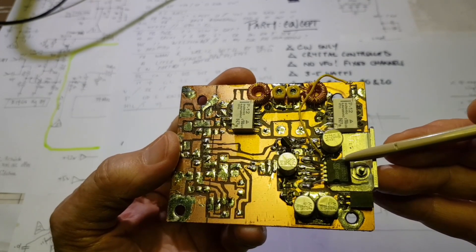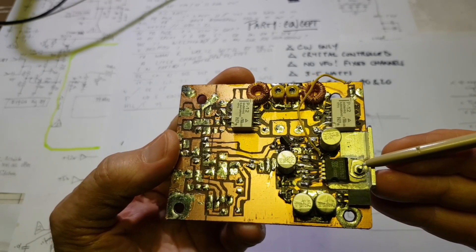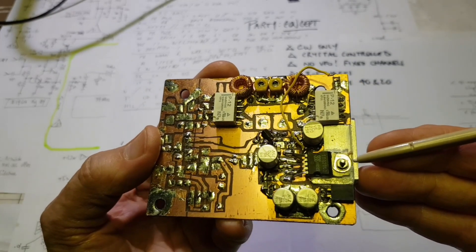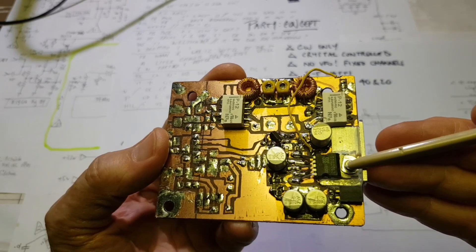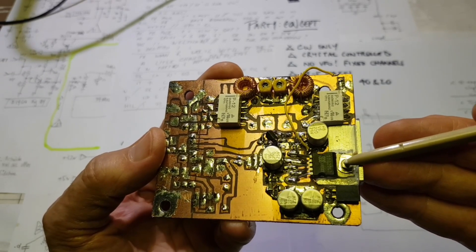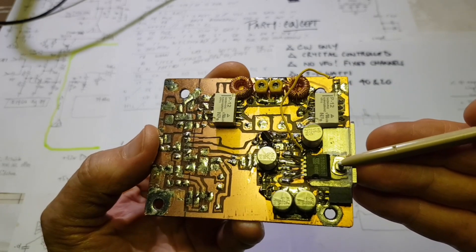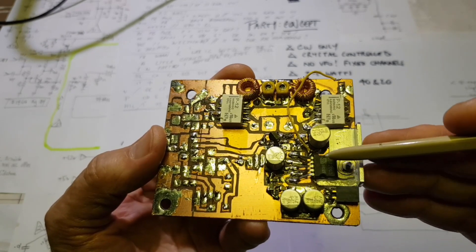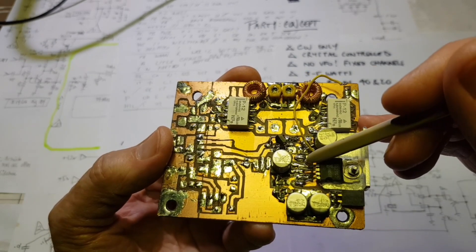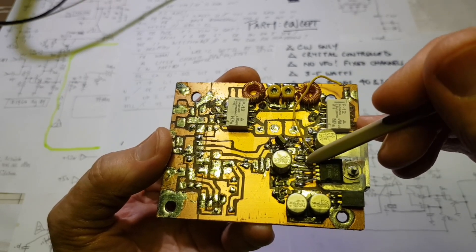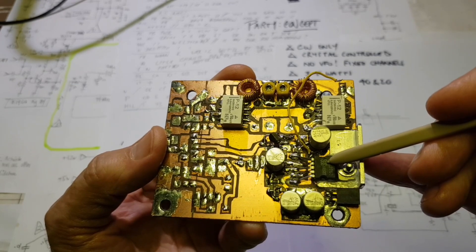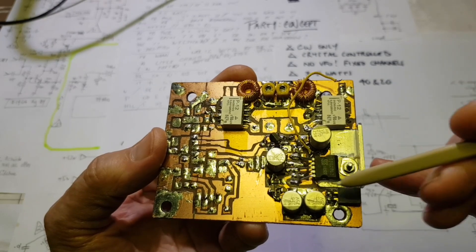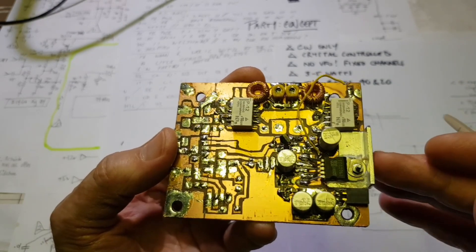When I power this up with no signal, the TDA2003 draws around 35 milliamps at 12 volts, which is not a ridiculous amount of power. But it's probably 25 to 30 milliamps more than either an op-amp based audio output or an LM386 would draw. This has huge headroom which will never be used.